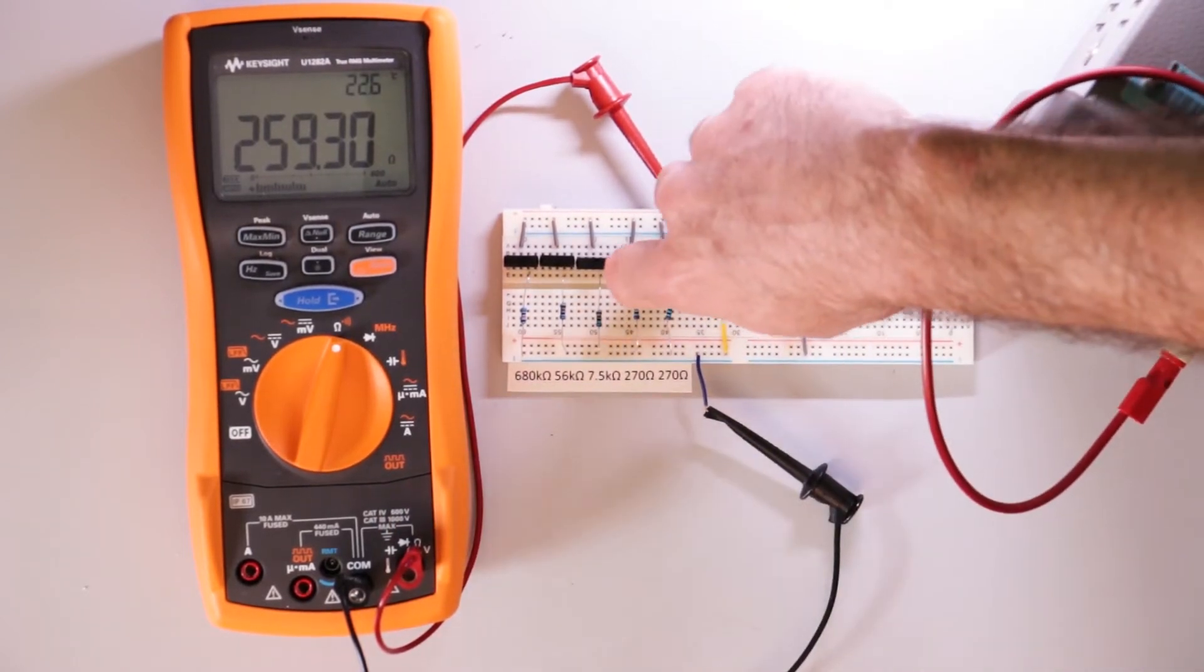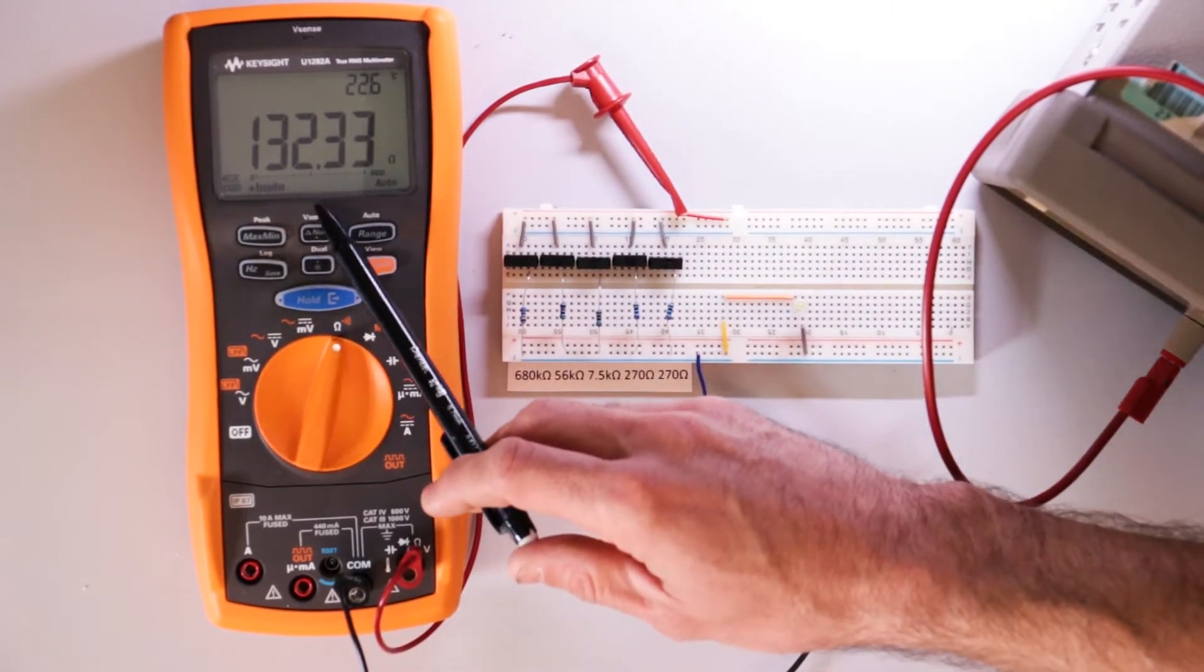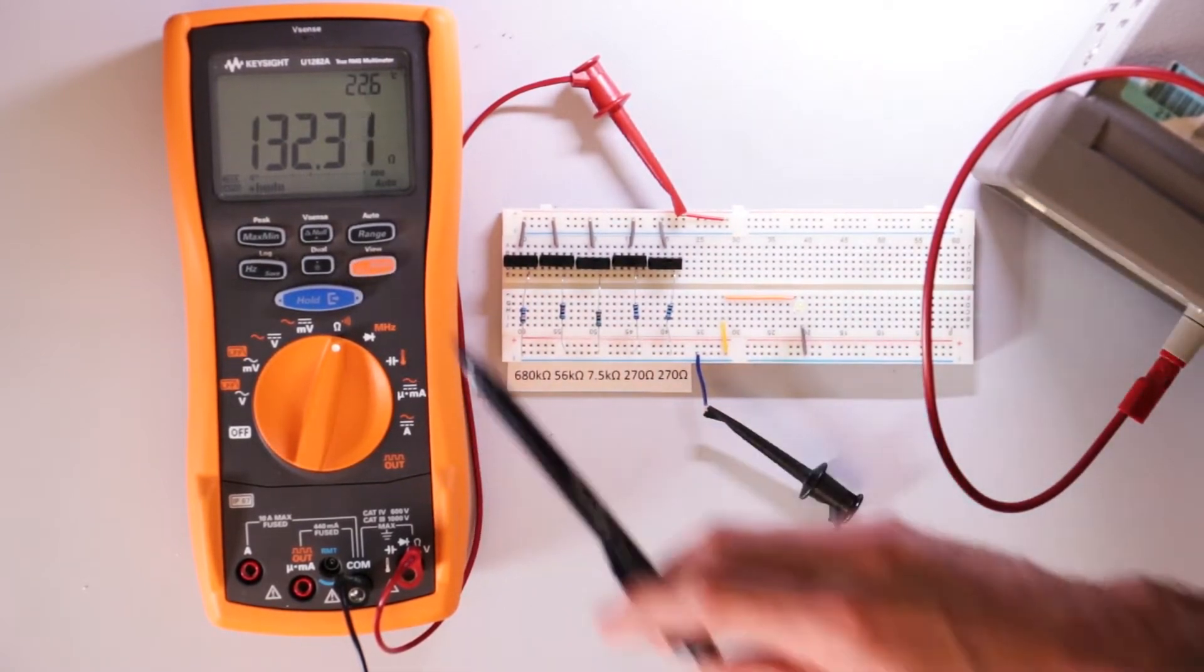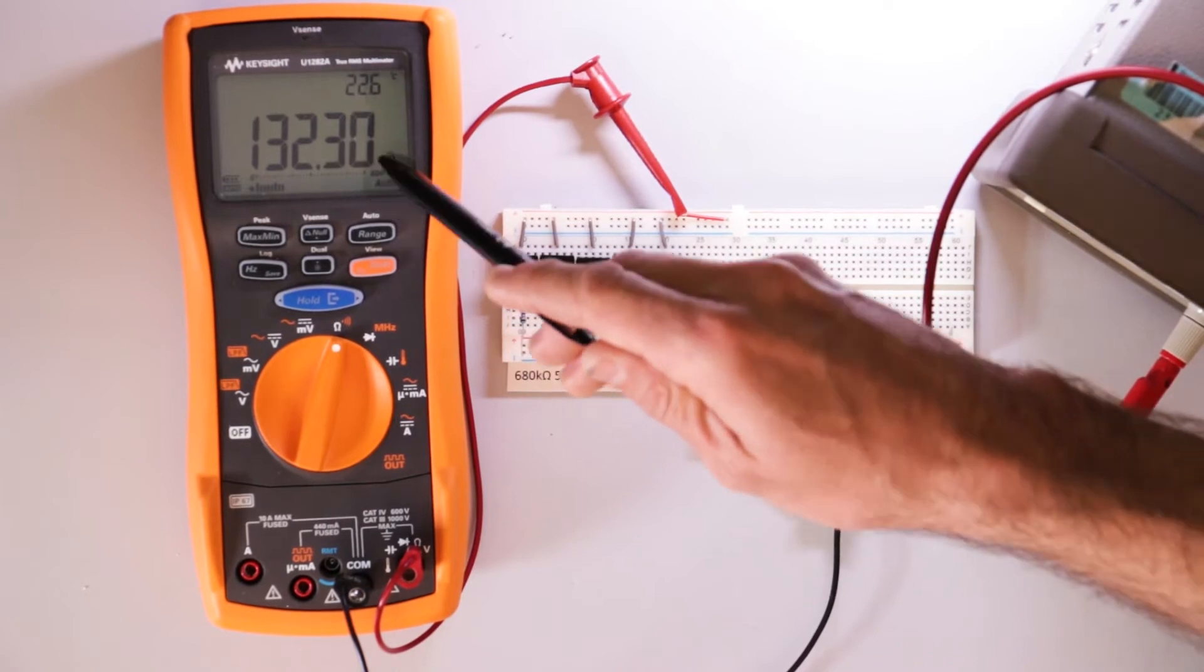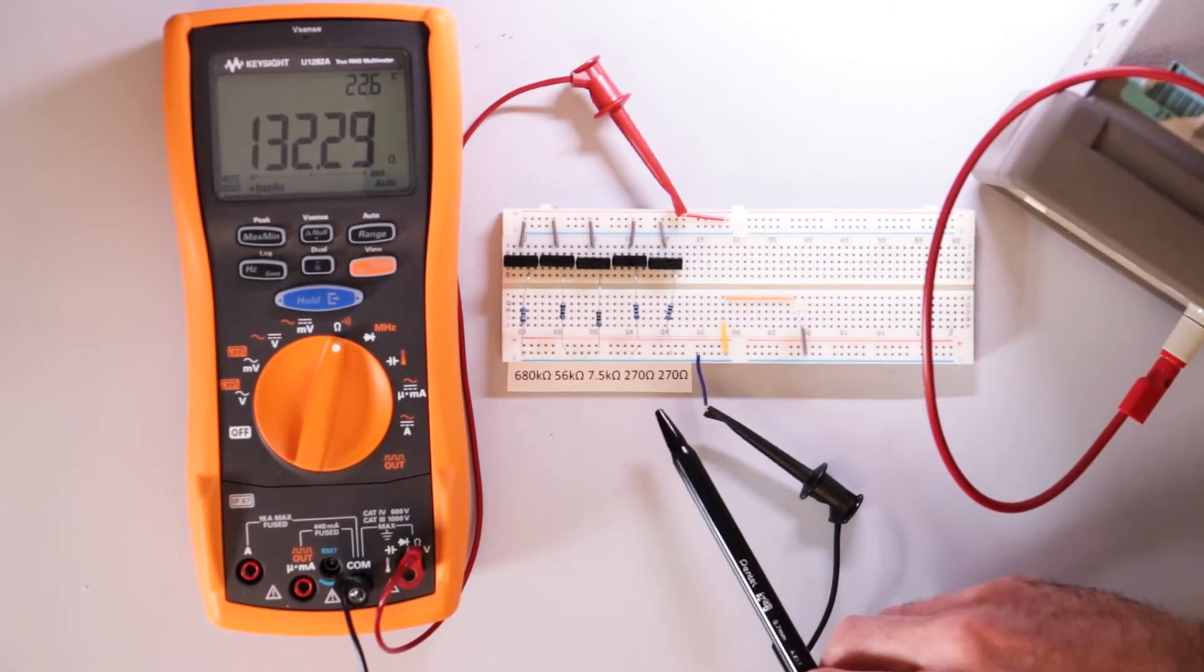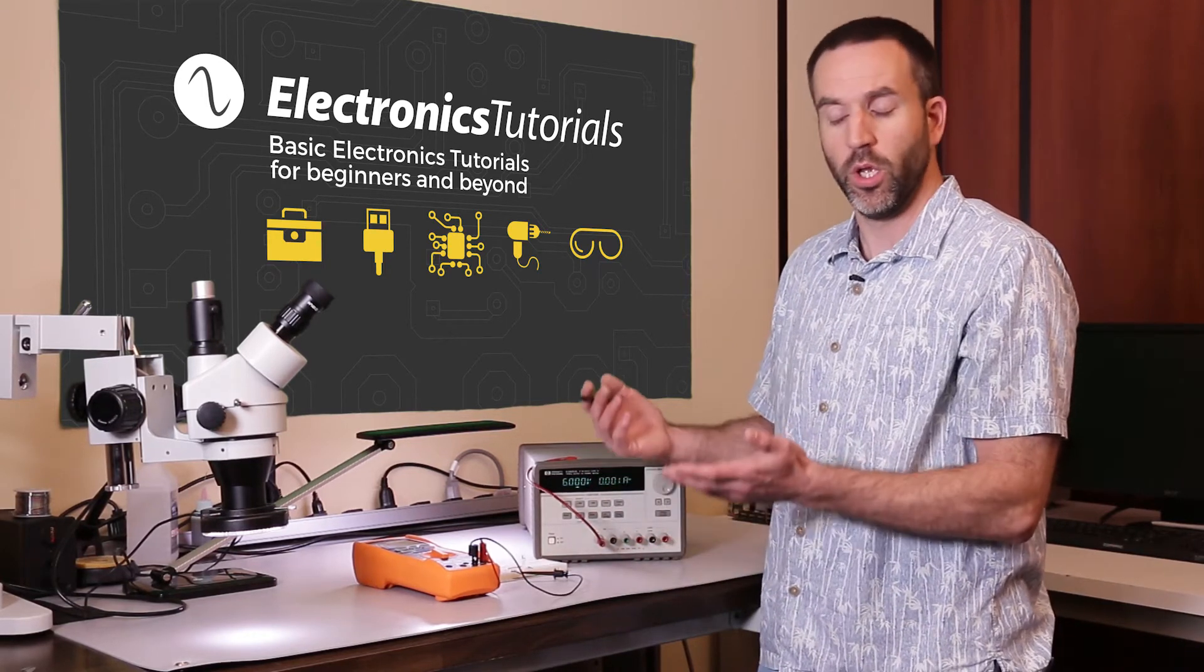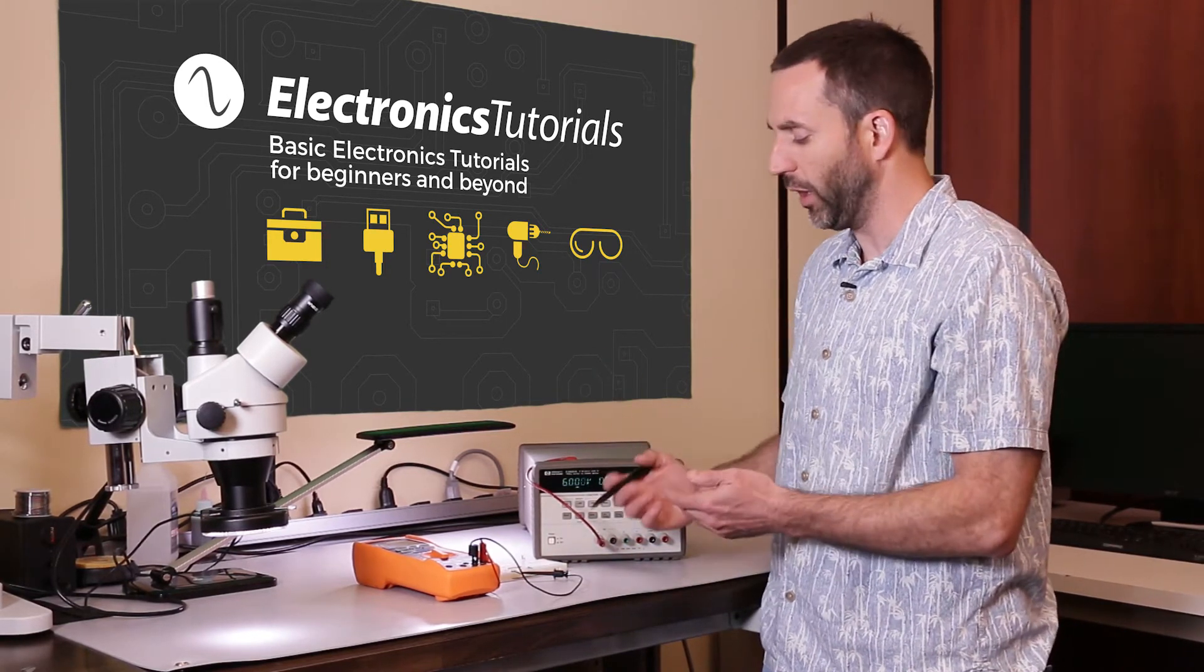And then the last resistor, another 270 ohm resistor, the total resistance now is 132 ohms. So you notice that the total resistance, the equivalent resistance, is less than any one of these resistors. That's just how resistors work when you place them in parallel. The total or equivalent resistance will be less than any one of the resistors.